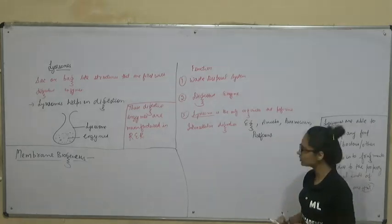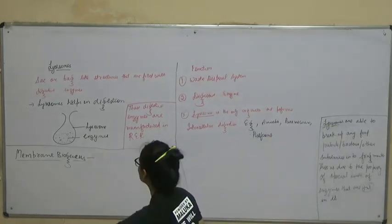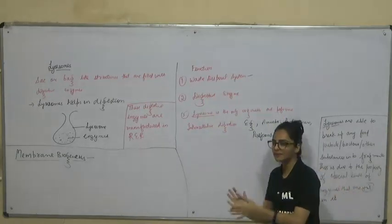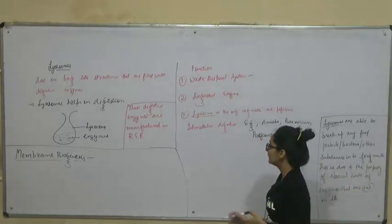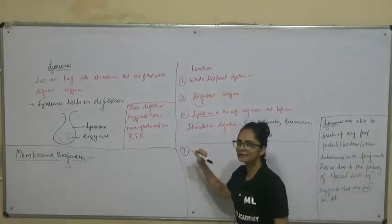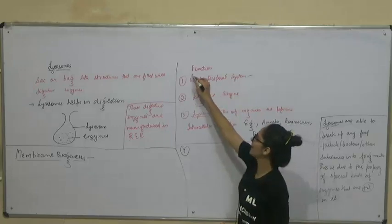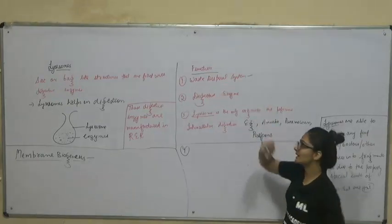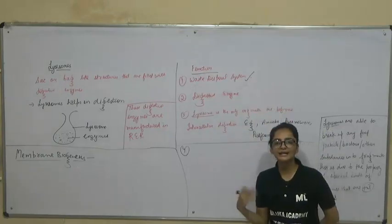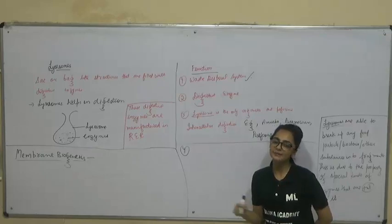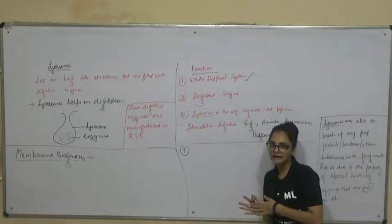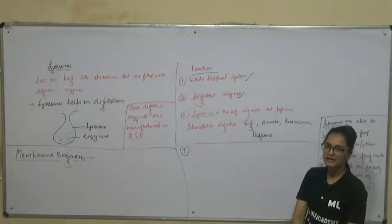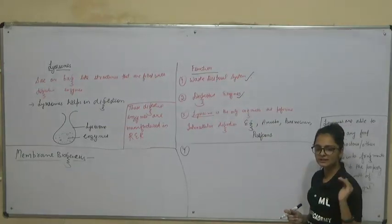A very important point about the function of lysosomes: lysosomes act as a waste disposal system — whatever waste exists, they digest it, converting it into simpler substances and removing waste material. They contain digestive enzymes, so they help in digestion by converting any food particle into simpler substances. Lysosomes are the only organelle that performs intracellular digestion, especially in unicellular organisms like amoeba. In 10th class you will study digestion in amoeba in detail, where digestion is totally taken up by lysosomes.